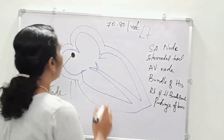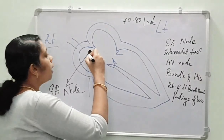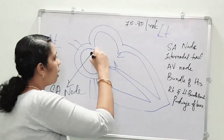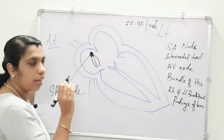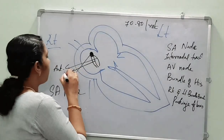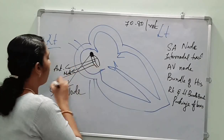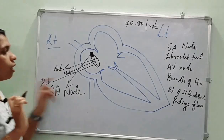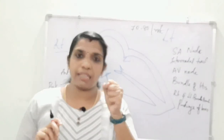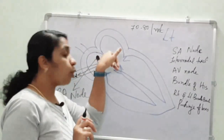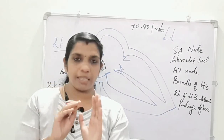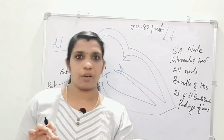After the SA node, there are internodal fibers — three internodal fibers: anterior internodal fiber, middle internodal fiber, and posterior internodal fiber. These internodal tracts carry the impulses produced from the self-excited SA node towards another node. Since the tract runs between the two nodes, it is known as the internodal tract.